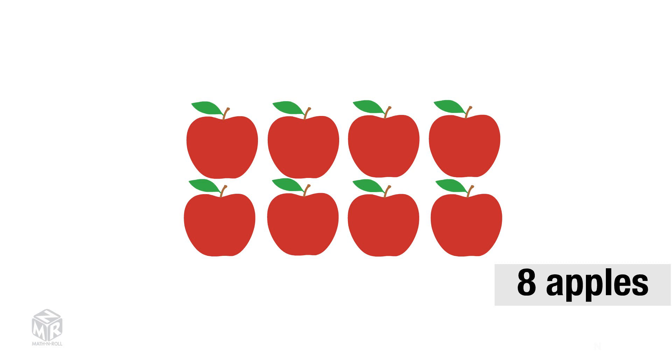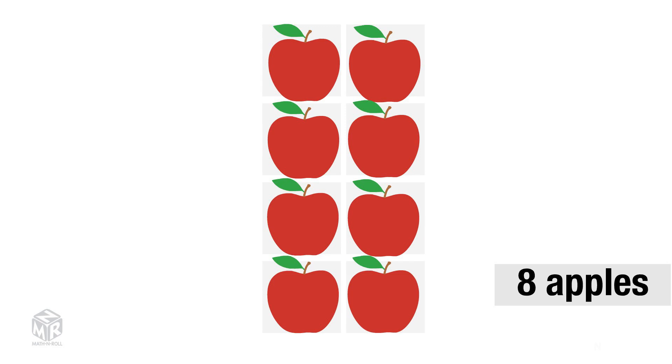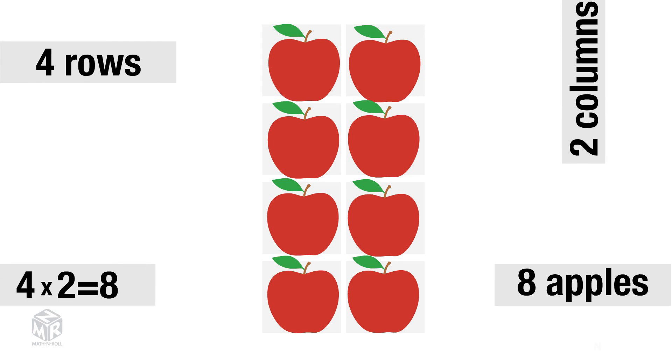Let's rearrange our array to show 8 apples. This time, we have 4 rows and 2 columns. The product is still 8, but the multiplication sentence is different. We write 4 times 2, because we have 4 rows and 2 columns. 4 times 2 equals 8.